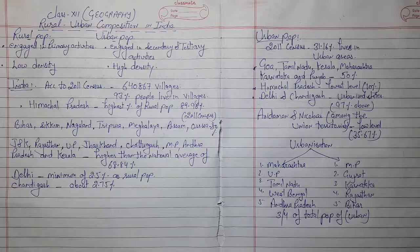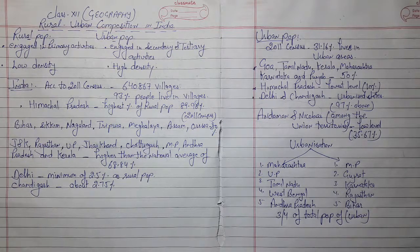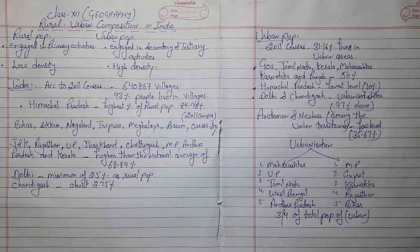The division of the population into rural and urban categories is necessary because both the categories differ in their livelihood, their social environment, occupational structure, density of population, and level of social and economic growth. These categories have significant variations.